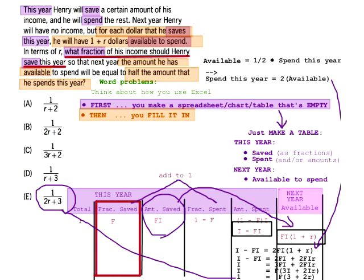F equals 1 over (3 plus 2R). Notice what you have here — this problem is still obviously very challenging, and if you set a goal of doing it in literally two minutes, you're not going to do that. Setting a goal of doing a problem like this in the average time is just not smart, because the problem is clearly not average.